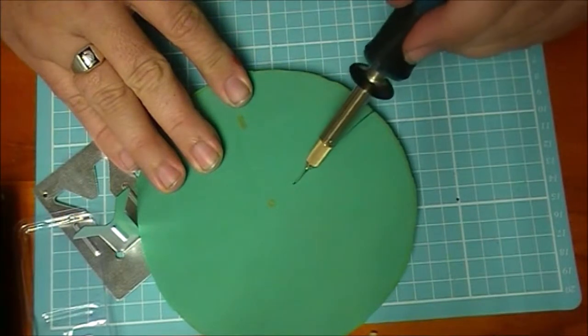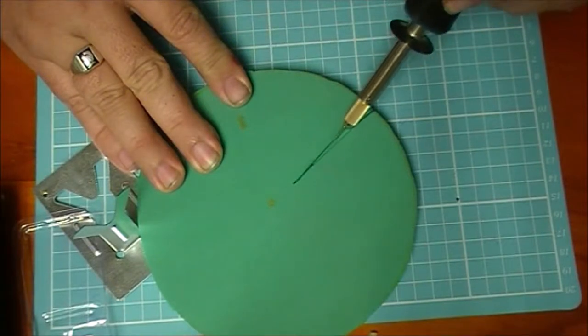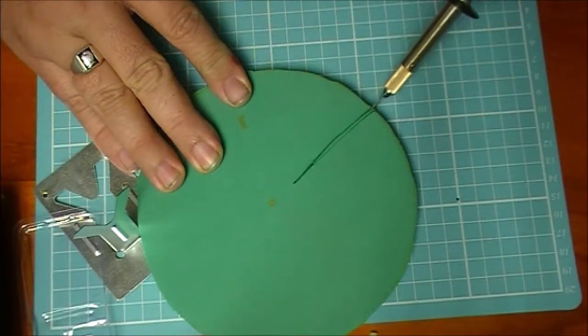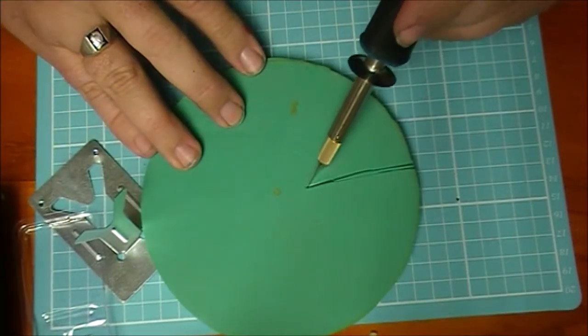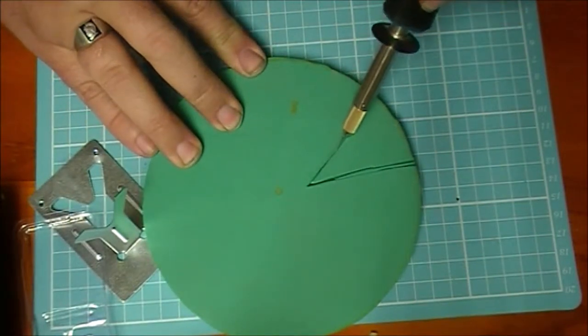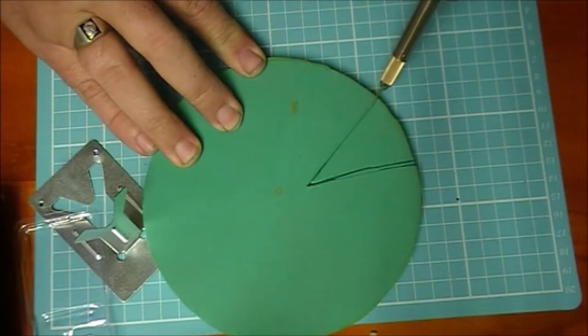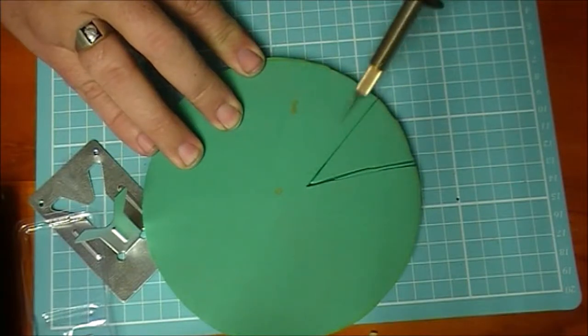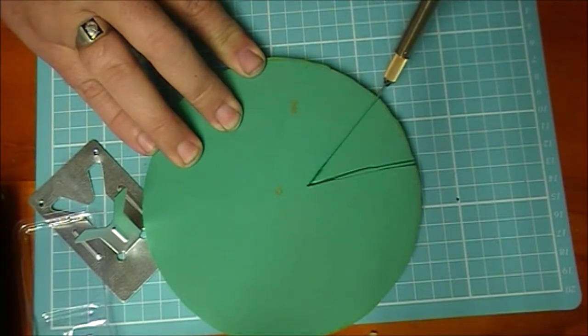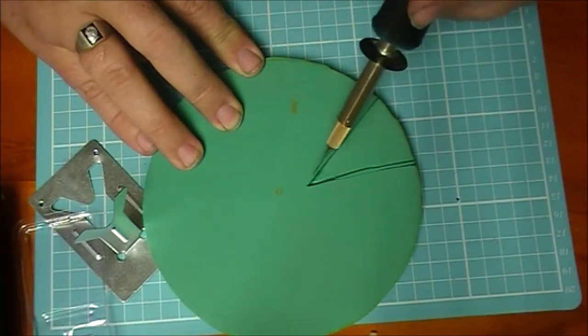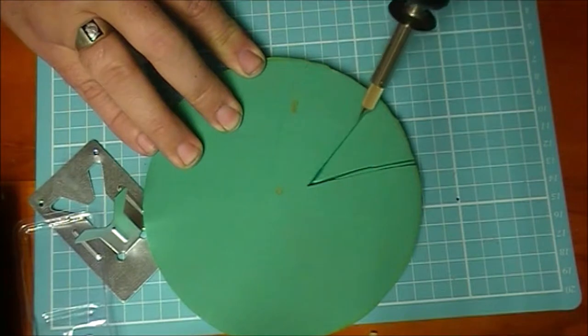You know the whole hot knife through butter thing? Yeah. Hot knife through floor mat. That's pretty sweet. I'm applying almost no pressure to that. And yes, I know, I know, you could just cut it with a razor.